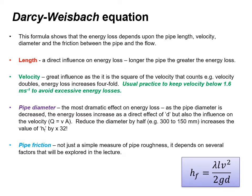The usual practice is to keep velocity below 1.6 meters per second to avoid excessive energy losses. In terms of pipe diameter, this has quite a dramatic effect on energy loss. As the pipe diameter is increased, energy losses change as a direct effect of the diameter, but also through the influence on velocity — remember that Q equals VA. Reducing the diameter by half increases the value of HF by 32.